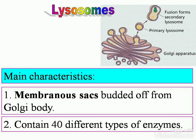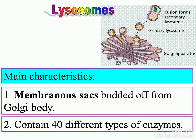Lysosomes. Main characteristics: membranous sacs budded off from the Golgi body — we learned about the Golgi apparatus in the last session — and they contain 40 different types of enzymes. The Golgi apparatus produces membranous sacs that bud off to become the primary lysosome, and fusion forms the secondary lysosome. You will get a visual of that.